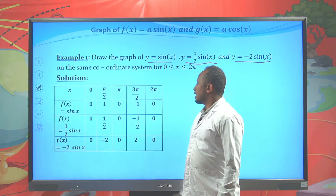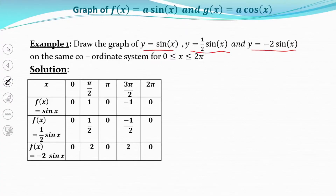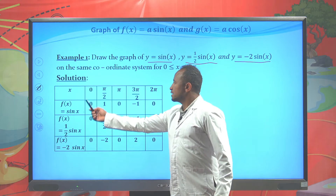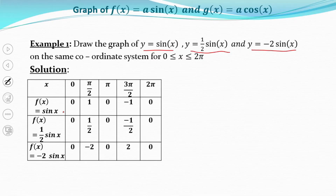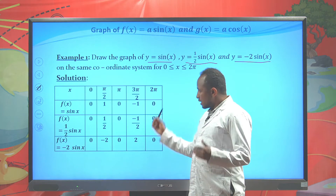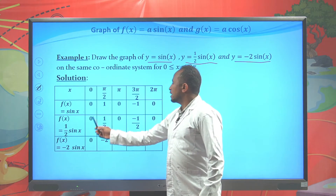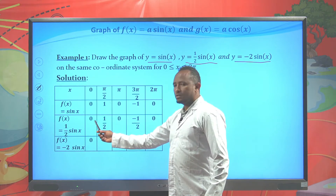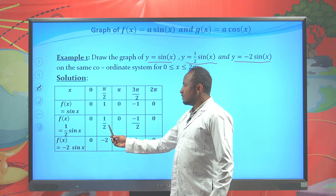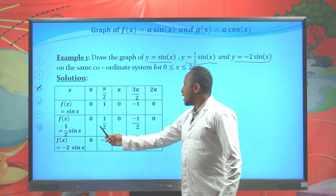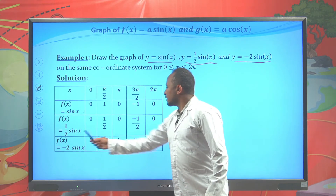We divide the x-axis on the interval from 0 to 2π into five parts: 0, π/2, π, 3π/2, and 2π. For f(x) = sin(x): sin(0) = 0, sin(π/2) = 1, sin(π) = 0, sin(3π/2) = -1, and sin(2π) = 0. For f(x) = ½sin(x), multiply each sin(x) value by ½: we get 0, ½, 0, -½, and 0.